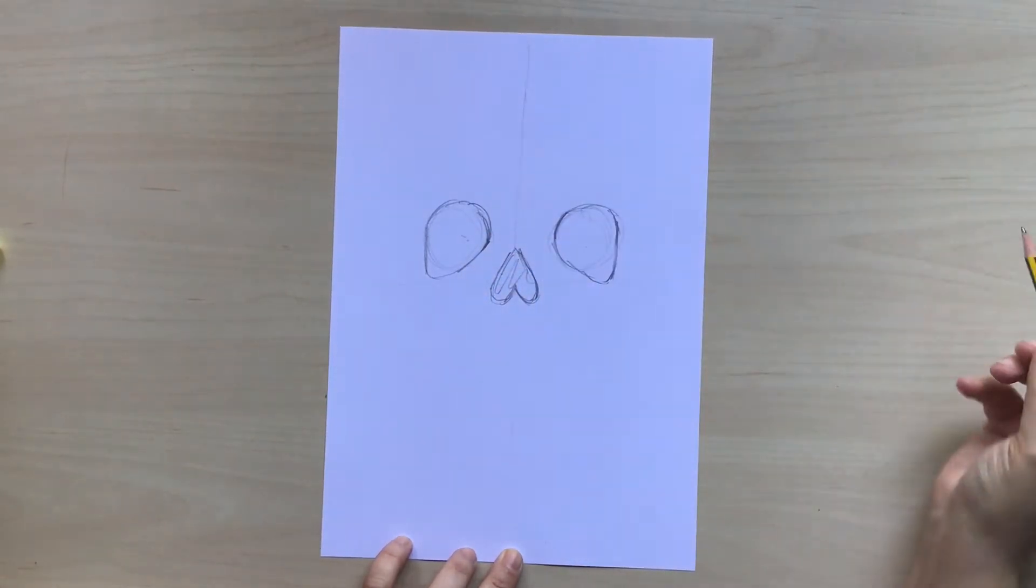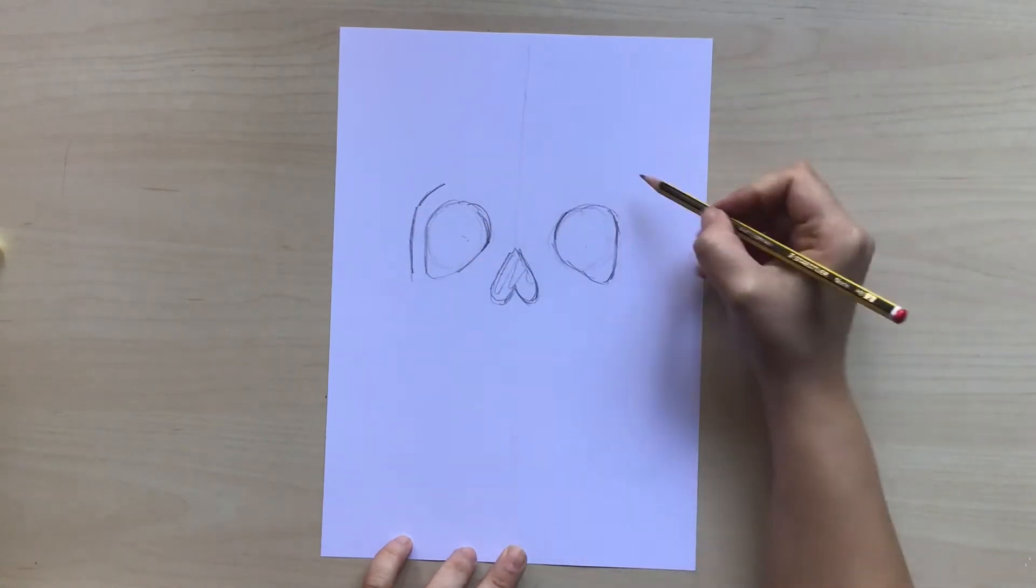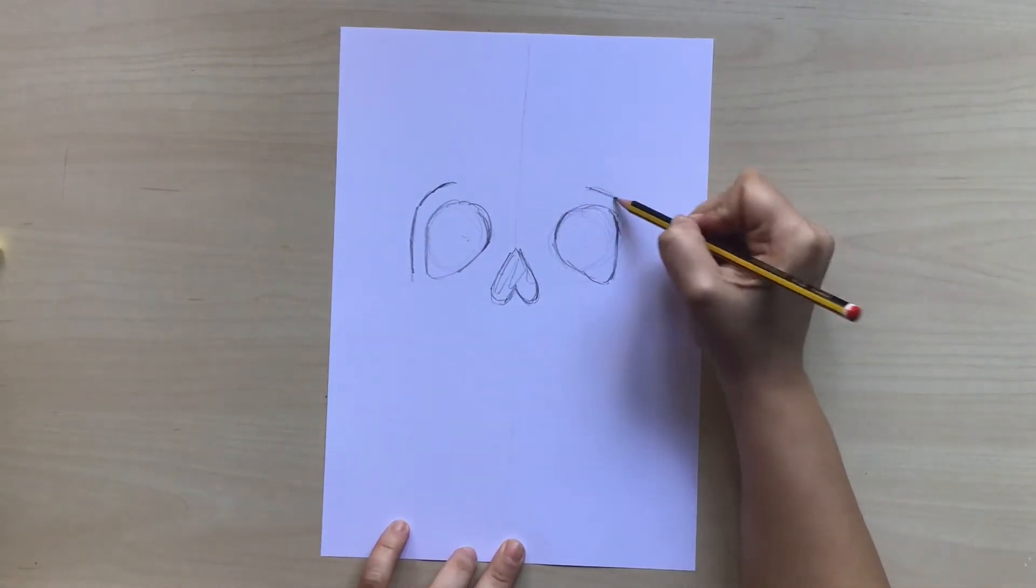Now let's draw the bone of the eyebrows. We're going to create that by drawing a curvy line outside of each eye.